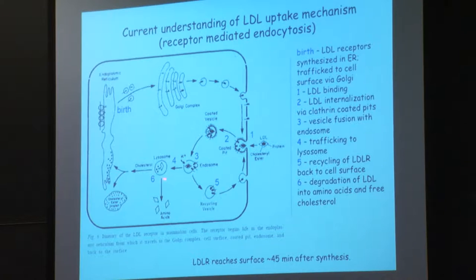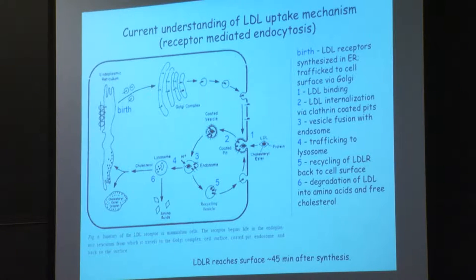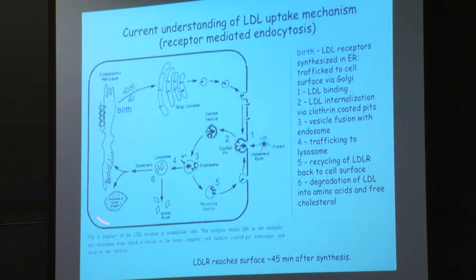When the receptors recycle to the surface, you're left with an LDL particle that fuses with another organelle called the lysosome. The lysosome is sort of like a proteasome — it's a bag of proteases and lipases that degrades everything: amino acids, fats, everything — allowing you to produce amino acids and free cholesterol. In the liver, cholesterol is often stored; it gets esterified and stored as triacylglycerol.